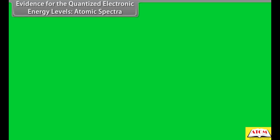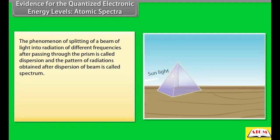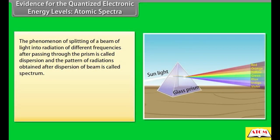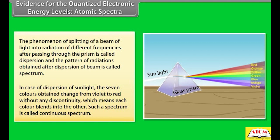Evidence for quantized energy levels — Atomic spectra: The phenomenon of splitting of a beam of light into radiations of different frequencies after passing through a prism is called dispersion. The pattern of radiations obtained is called a spectrum. In the case of dispersion of sunlight, the seven colors change from violet to red without any discontinuity, giving a continuous spectrum.